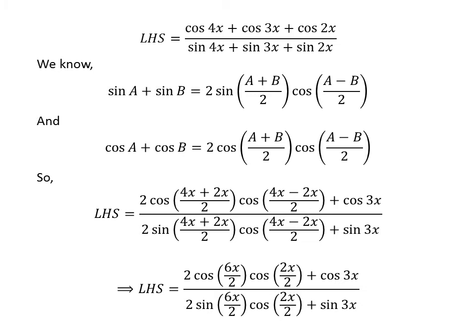Further simplification gives us the left hand side equal to 2 times cosine of 3x times cosine of x plus cosine of 3x in the numerator, upon 2 times sine of 3x times cosine of x plus sine of 3x in the denominator.